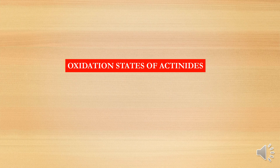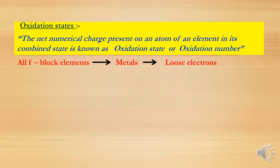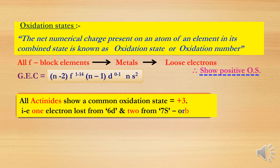Next we move to the oxidation states of actinides. The oxidation state, or oxidation number, is the net numerical charge present on an atom of an element in its combined state. All f-block elements are metals, and metals tend to lose electrons, showing a positive oxidation state. The general electronic configuration of f-block elements is (n-2)f¹⁻¹⁴, (n-1)d⁰⁻¹, ns². All actinides show a common oxidation state of +3 because there is one electron in the penultimate cell and two in the valence cell, which are easily lost.